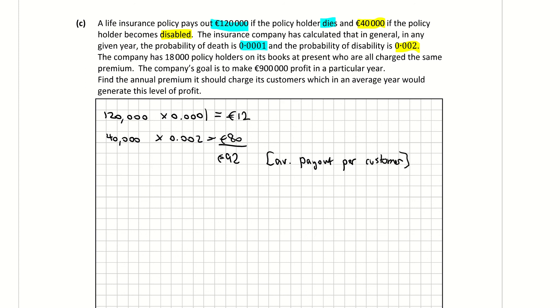So in each customer's policy, €92 has to be set aside for paying out. Let's multiply that now by 18,000 because we have 18,000 policyholders. So I want to find out what's the total amount of money that this insurance company has to pay out. So when I multiply that, I get 165,600. So counting back three, that's €1,656,000. That's the expected payout.